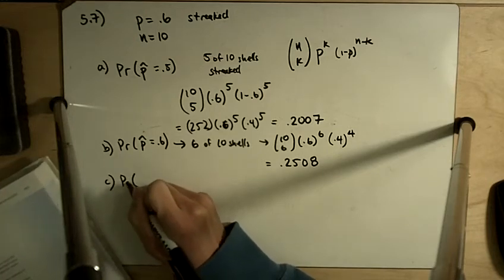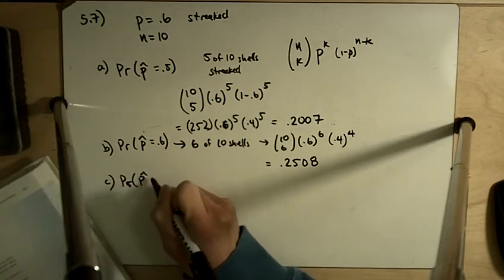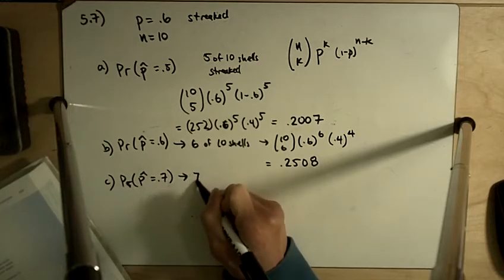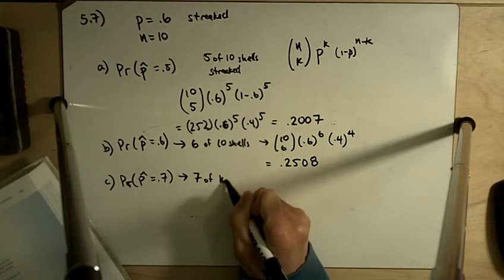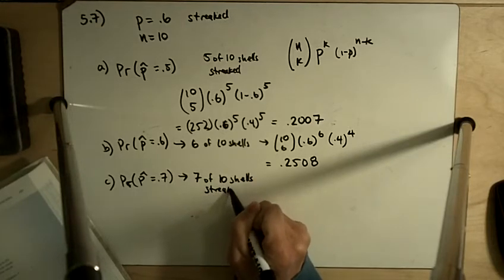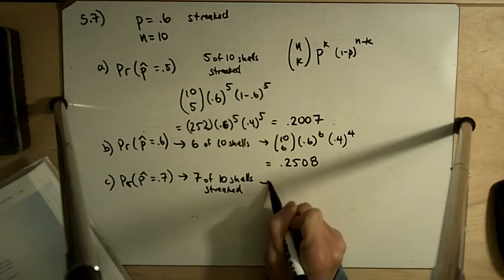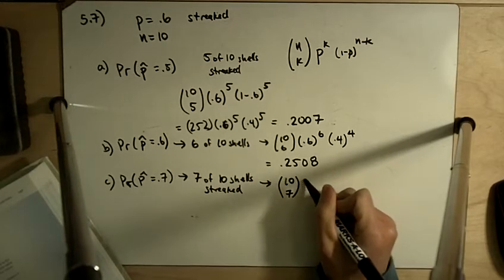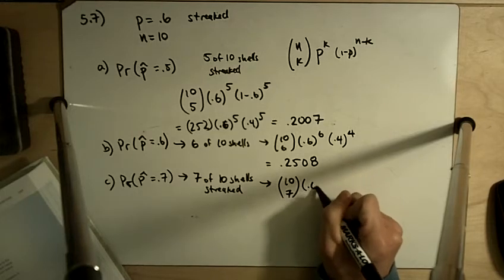Part C asks for the probability that P hat is equal to 0.7. Basically, 7 of 10 shells are streaked. So that leads us to 10 choose 7, 0.6.